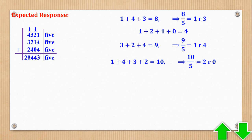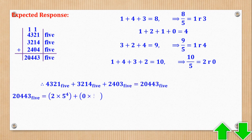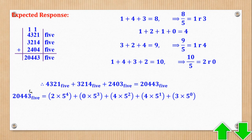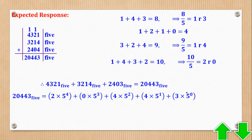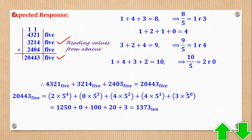Remember, they want the answer in base 12. We cannot convert directly from base 5 to base 12, so we first convert to base 10. Assigning place values 0 through 4, the conversion is: 2 times 5 to the power 4, plus 0 times 5 to the power 3, plus 4 times 5 to the power 2, plus 4 times 5 to the power 1, plus 3 times 5 to the power 0. Using a calculator, this gives 1373 in base 10.